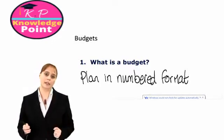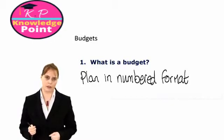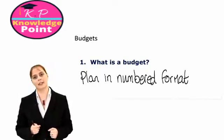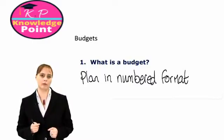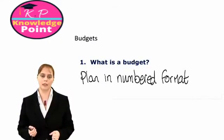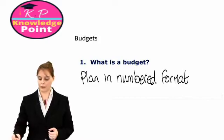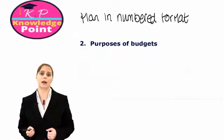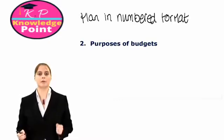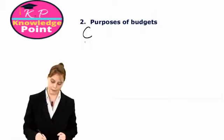Management need to consider how many units of their product they expect to sell and plan for what they think their costs should be. You may be wondering why it is important that management undertake these budgeting activities. There are a number of different reasons why we prepare a budget, and it might be useful to remember the purposes of a budget by using the acronym CRUMPET.